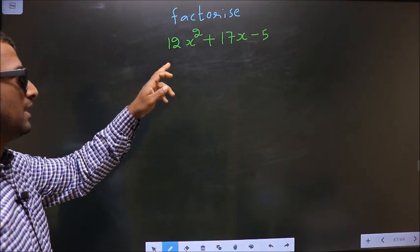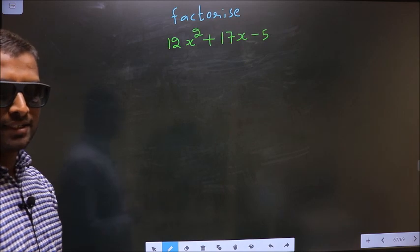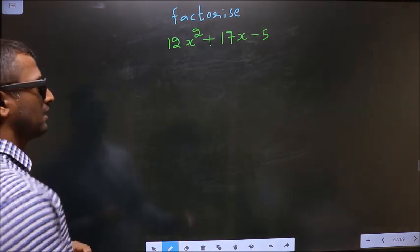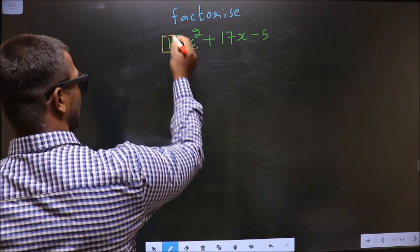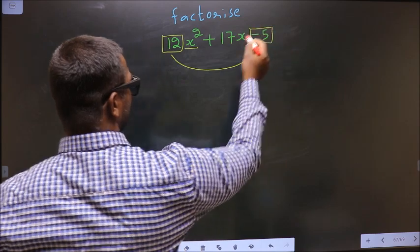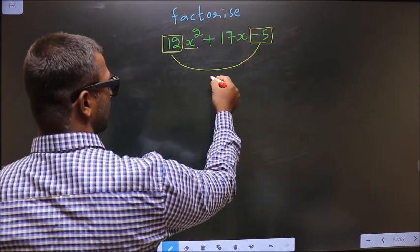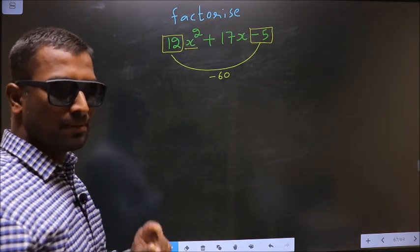Factorize 12x square plus 17x minus 5. To factorize, step 1: the coefficient of x square, that is 12 here, should be multiplied to the constant, that is minus 5. So 12 into minus 5 is minus 60. This is your step 1.